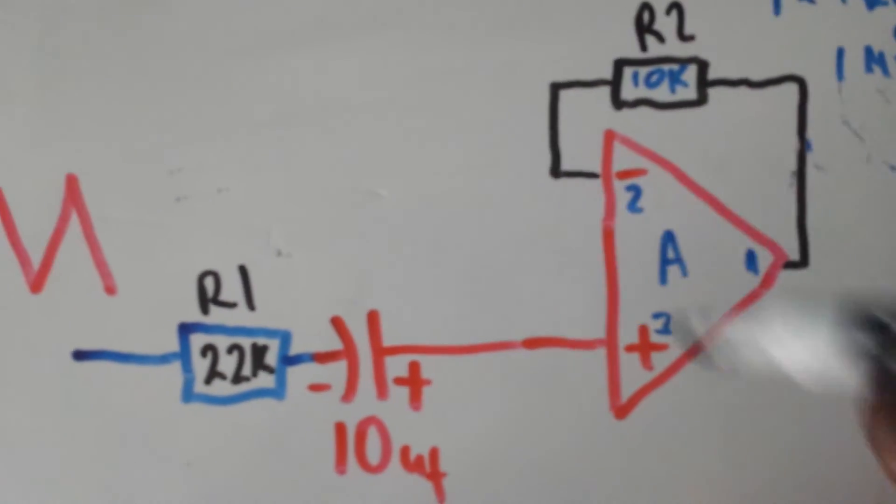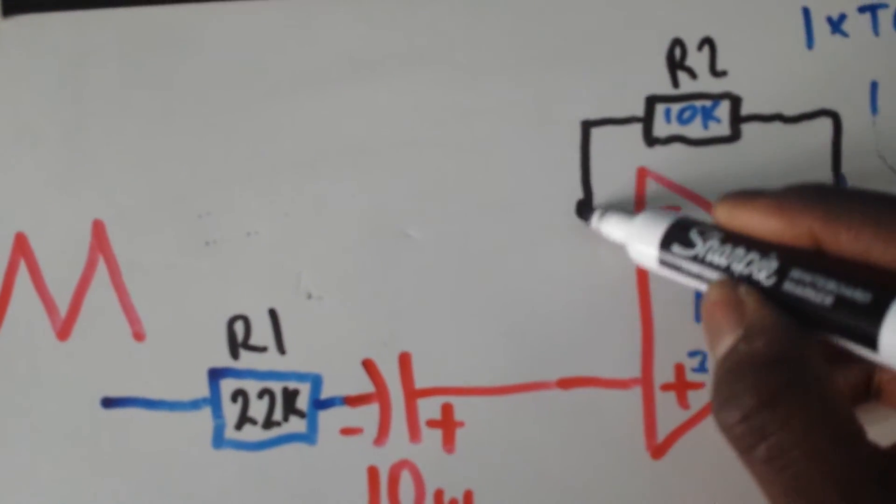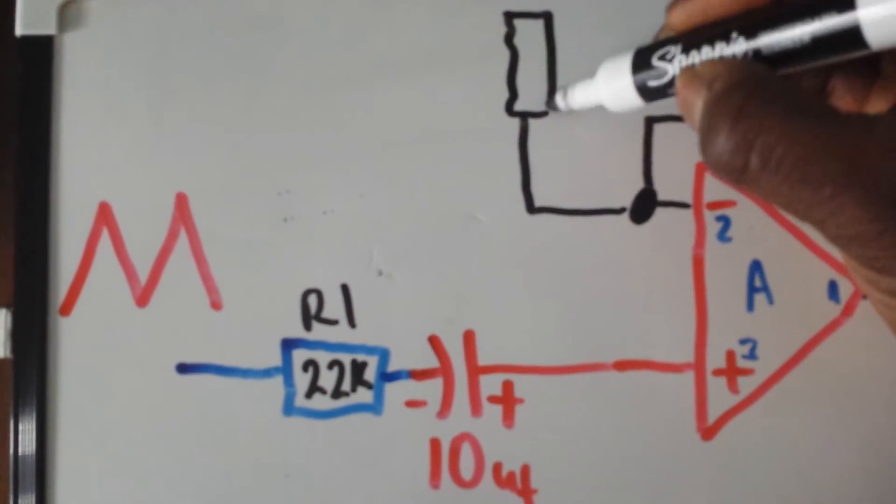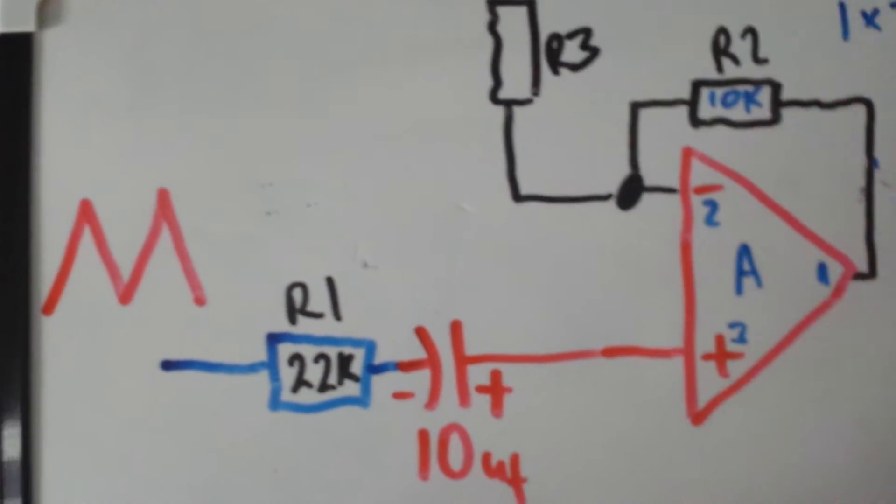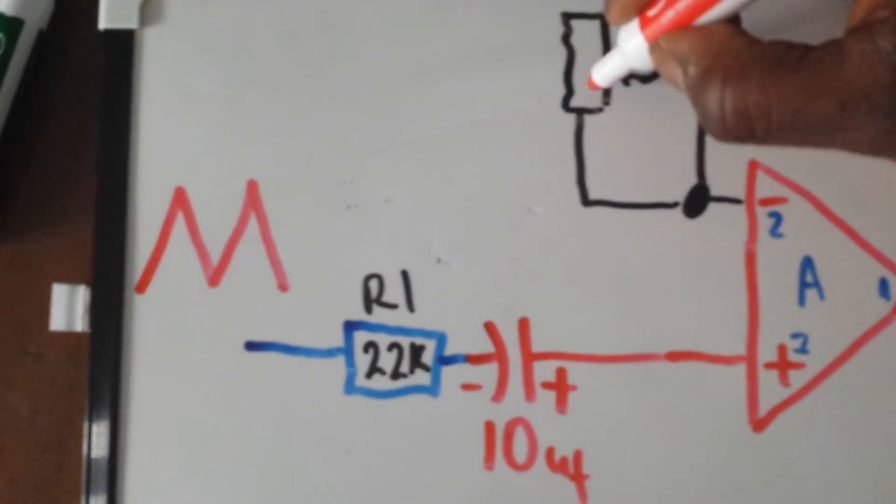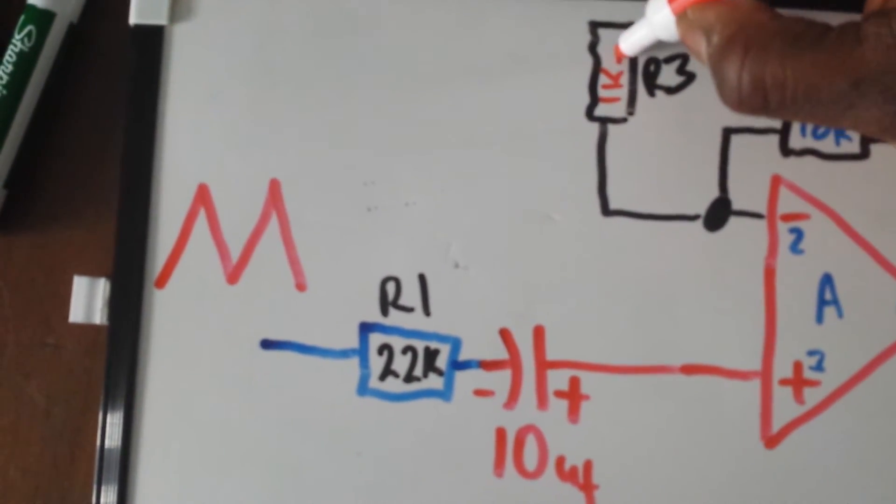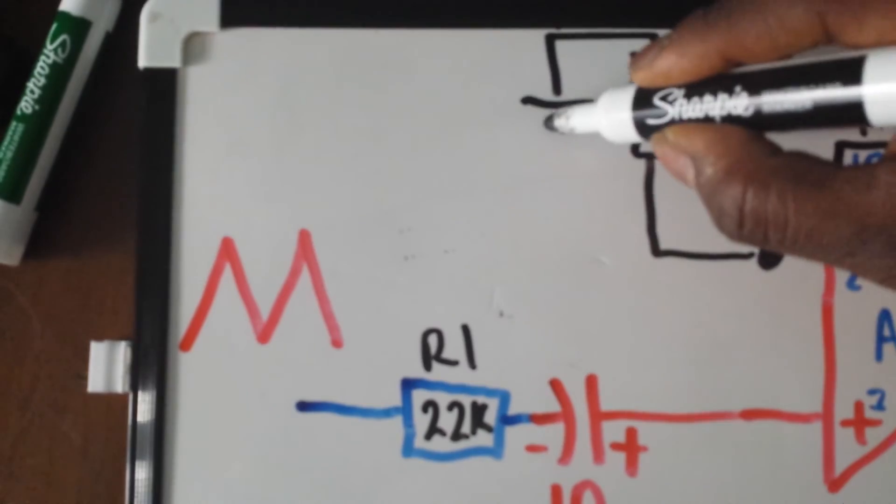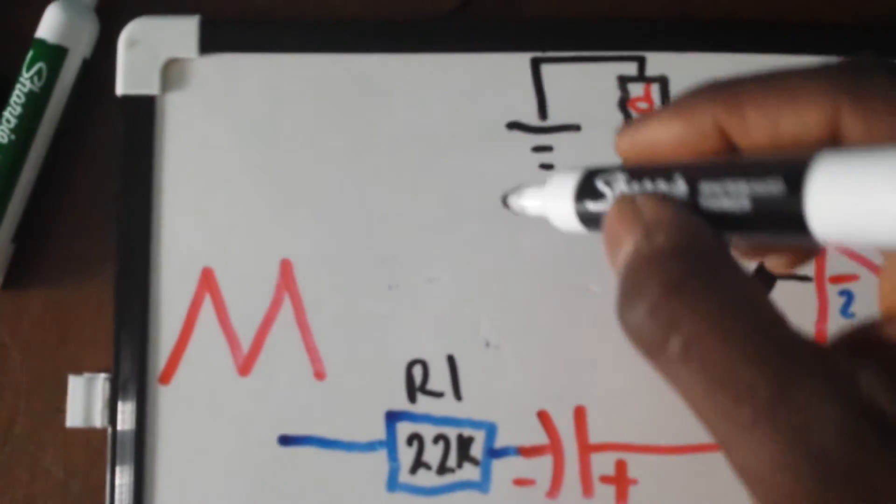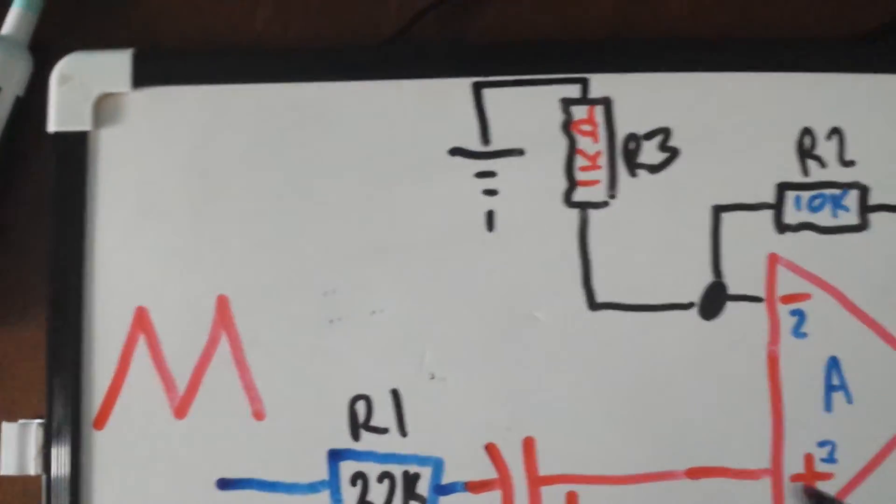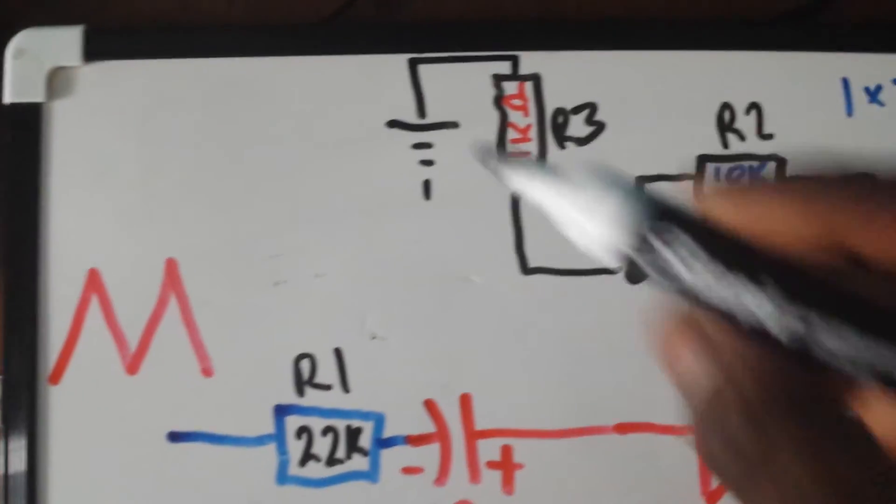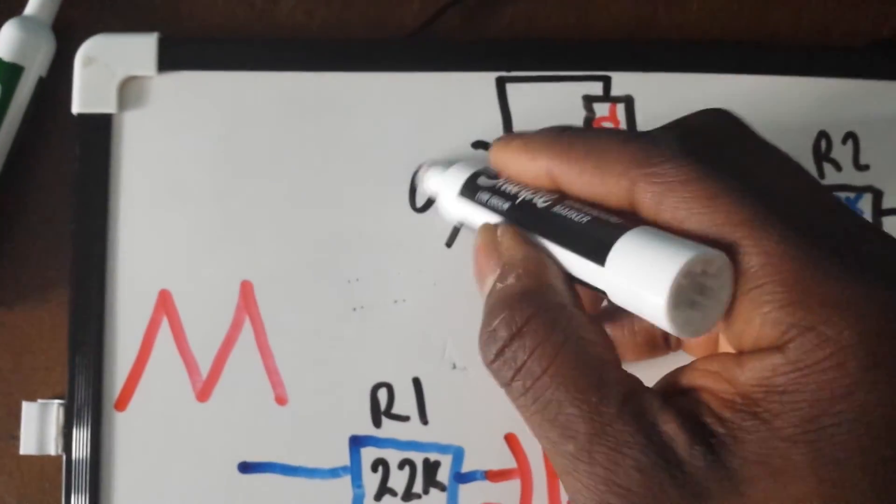We need to take another resistor from the same side, which we'll call R3, and it can be 1k. We will take this to ground or our zero volts. Our zero volts, if we're using two batteries, will be where you've connected the plus and minus from each battery together, so ground or zero volts.